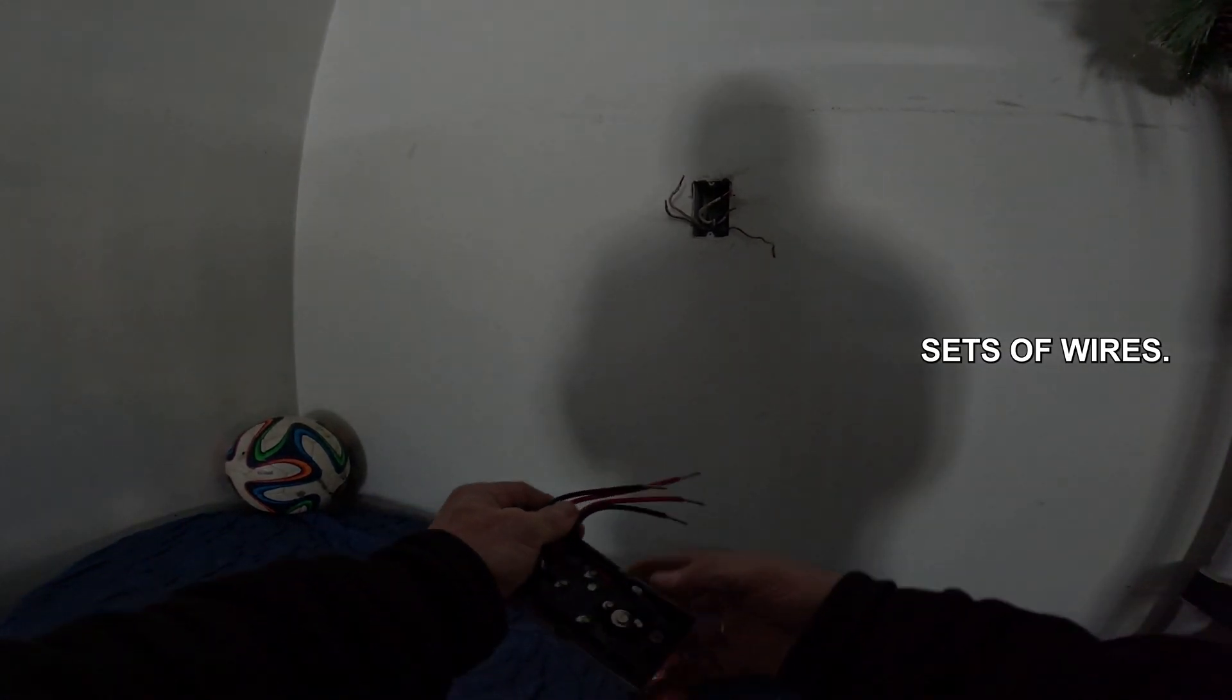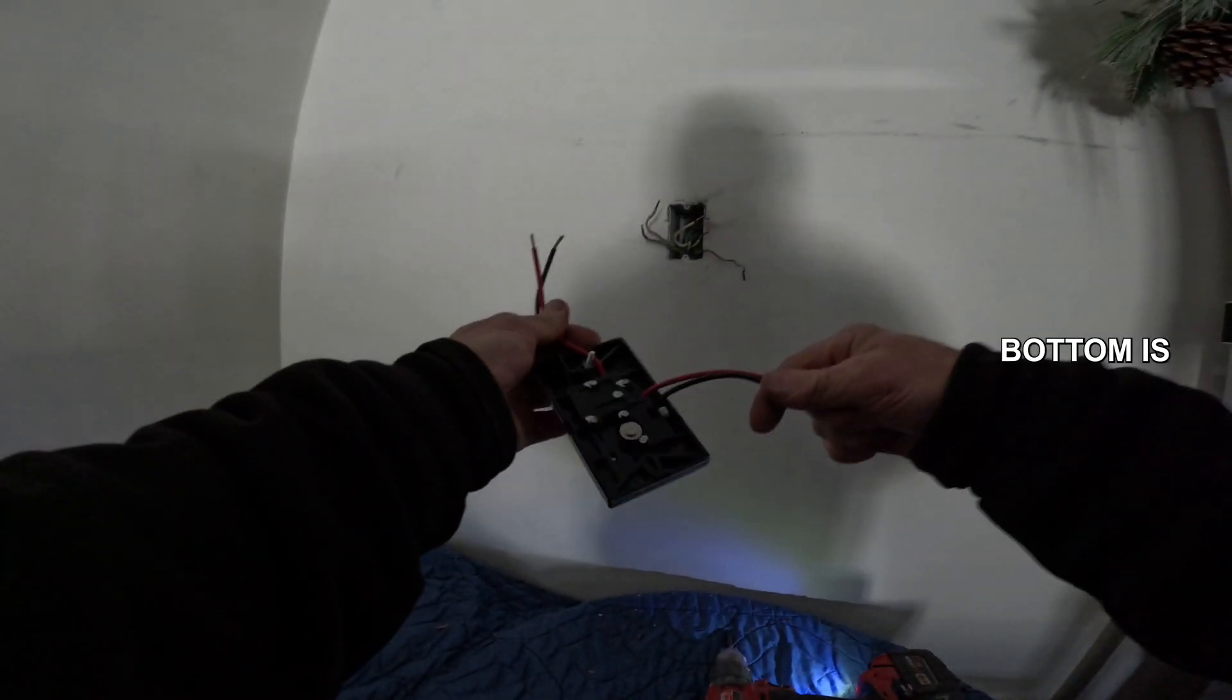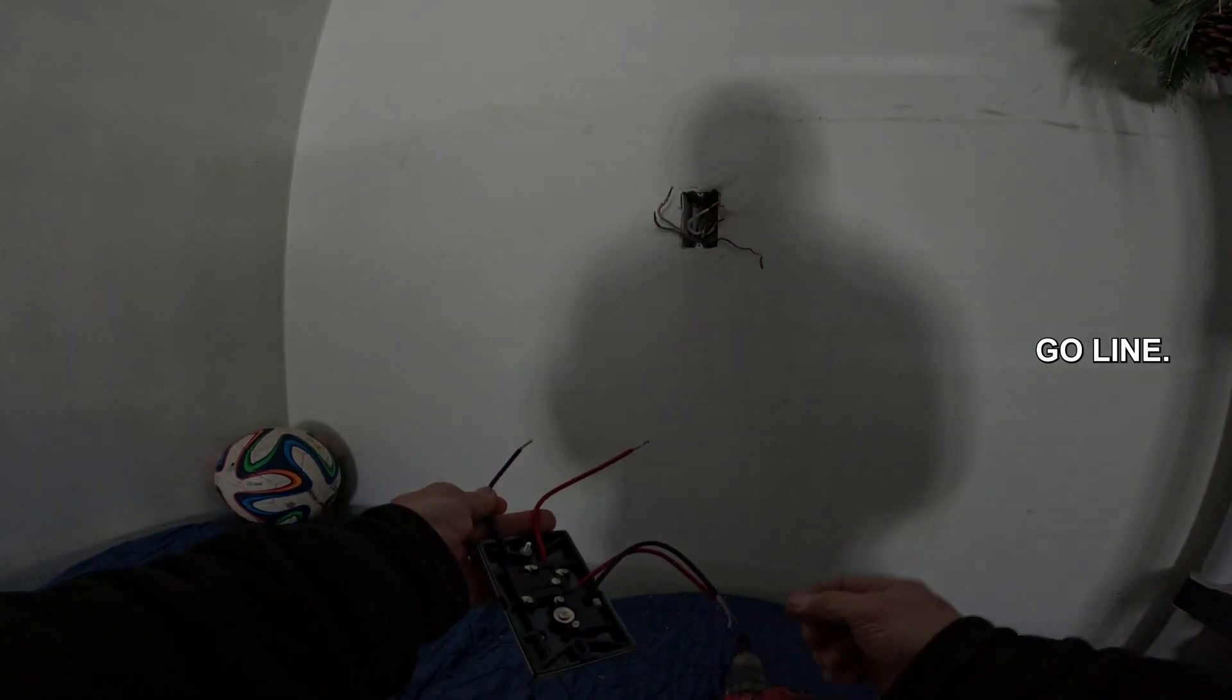You'll have two sets of wires. It'll also tell you on it if you look close, it'll say line is red, load is black. This top is a set and this bottom is a set. So you're going to go line. Remember line is red.